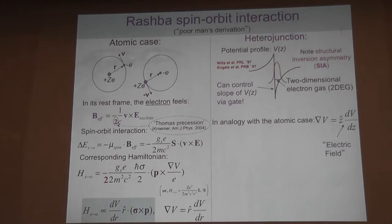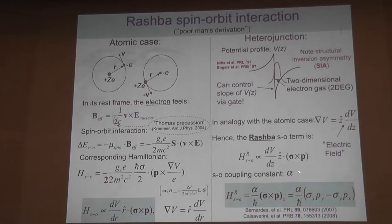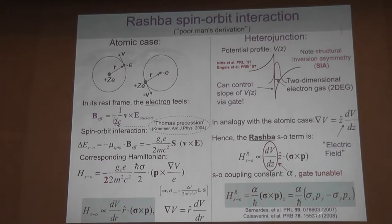This is the usual atomic physics argument: you have an electron in an atom, you sit on the electron, and it feels an effective magnetic field due to the nucleus in its reference frame. The classical mu energy is just mu dot B, which turns out to be the spin-orbit interaction - that's the usual LS coupling in an atom with a central potential.